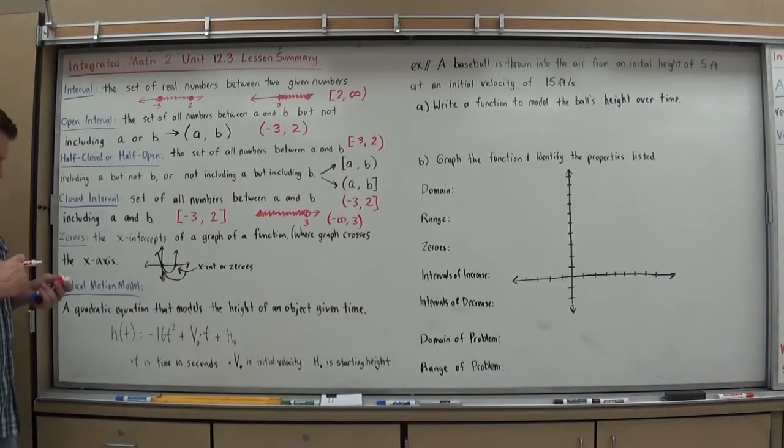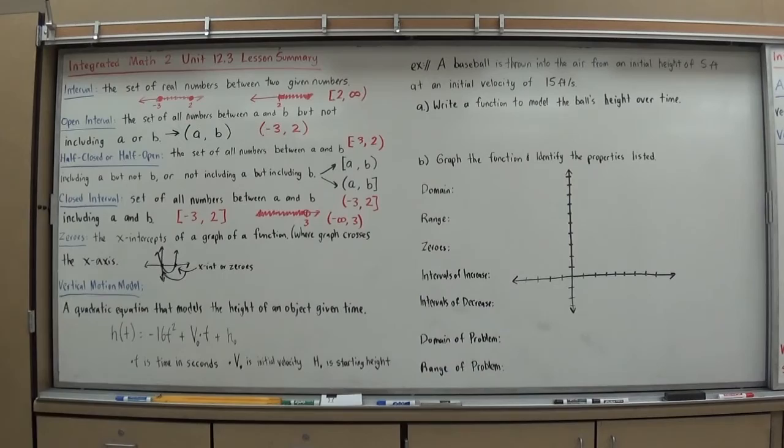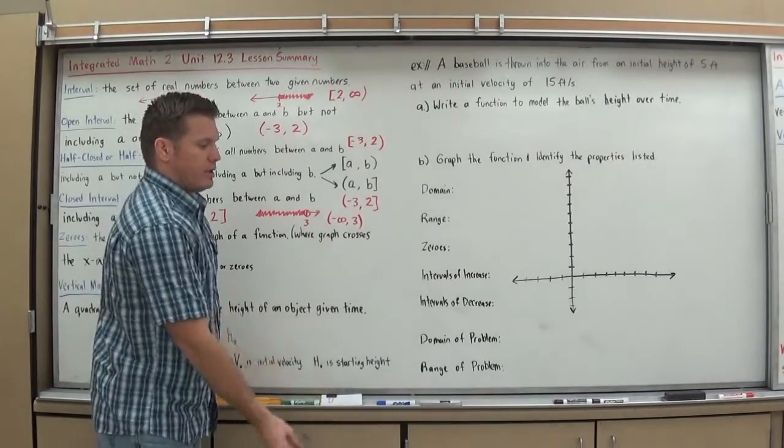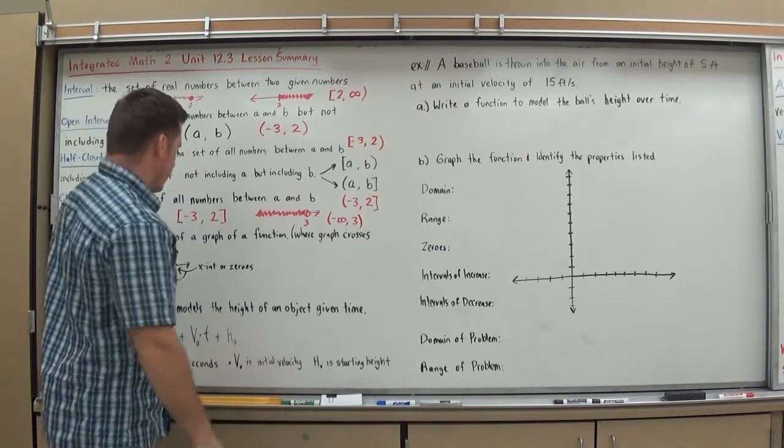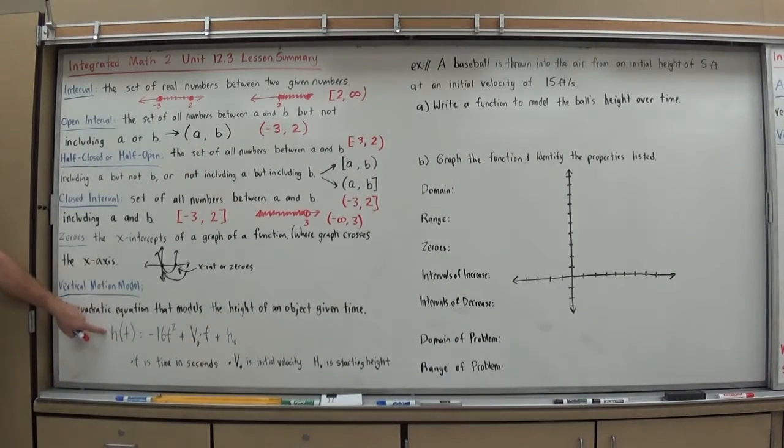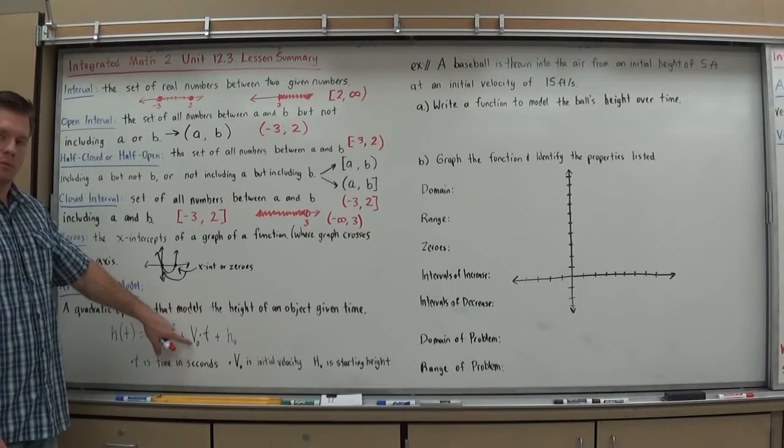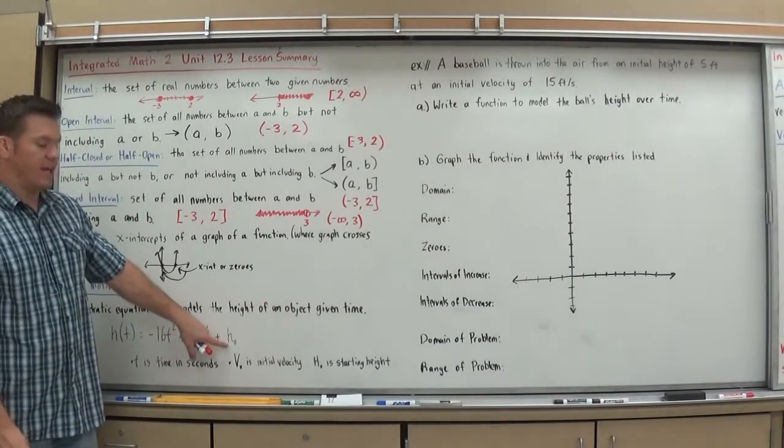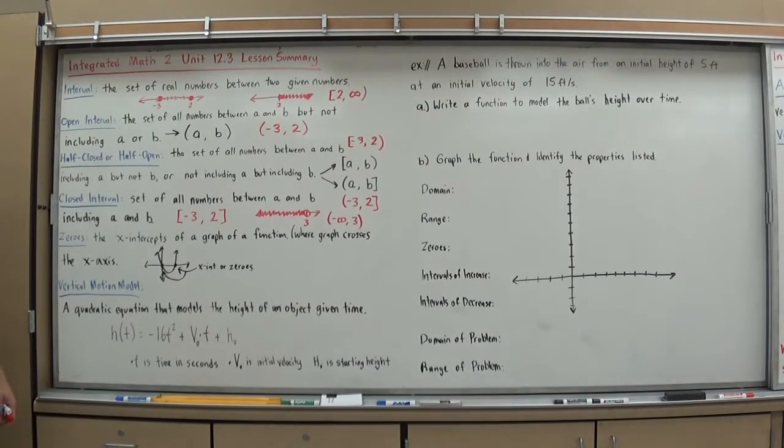Now, vertical motion. What's a vertical motion model? Vertical motion model is a quadratic equation that models the height of an object given time. So, here's an object. I'm going to let it leave my hand from some certain height. If I go from here, it's starting at a higher height than here. So, in this equation, h of t represents the height of the object over time. The equation that models it is negative 16t squared, where t is time it's in the air, plus v sub zero. That means the initial velocity. So, it's the speed at which it leaves your hand.